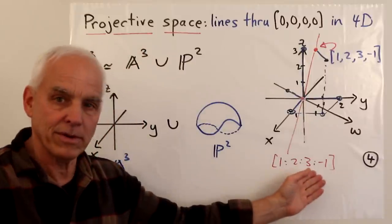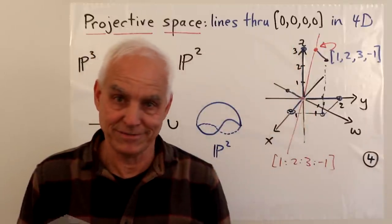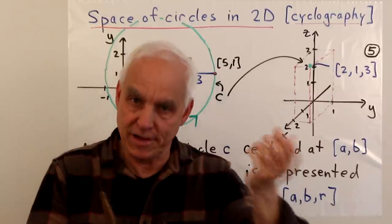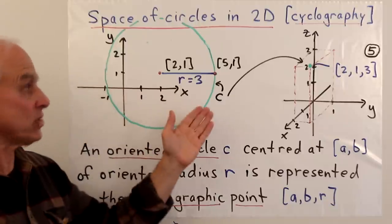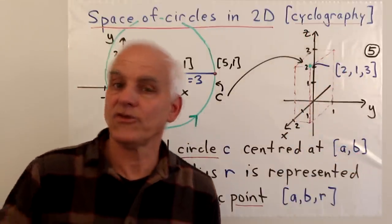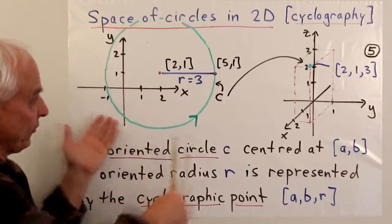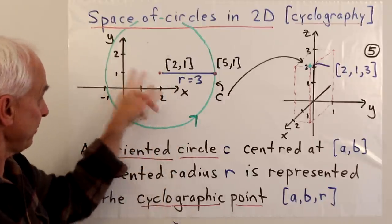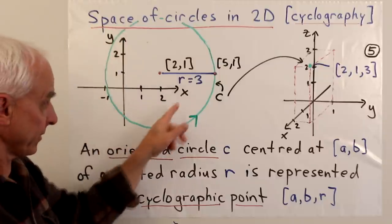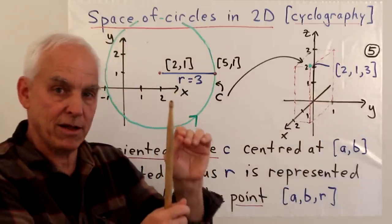Just to understand our three-dimensional space, it's helpful to think about four dimensions. As another application: let's go back to the planar situation of circles in two dimensions and talk about an approach initiated in the 19th century called cyclography. This is a way of describing circles in terms of their centers and radii. A circle centered at the point (2, 1) with radius 3 — passing through (5, 1) — can be described by the triple (2, 1, 3), and therefore denoted by a point in three-dimensional space.